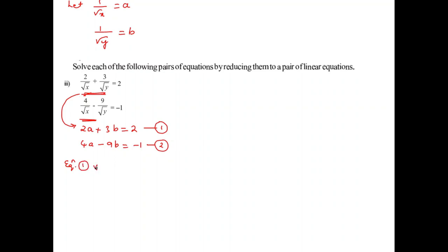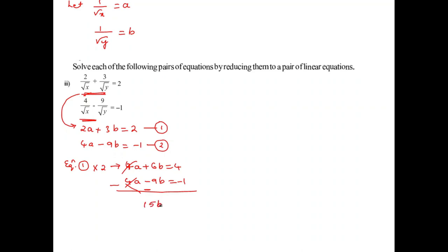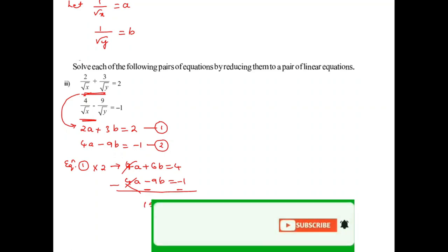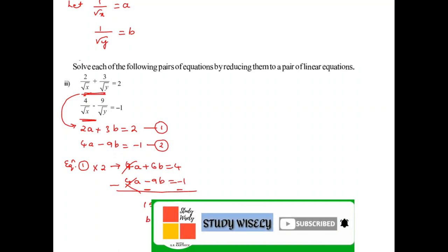Multiplying equation 1 by 2 gives 4A plus 6B equals 4. Keeping equation 2 as is, and subtracting: 4A cancels, leaving 15B equals 5. Therefore B equals 5 by 15, which simplifies to 1 by 3.